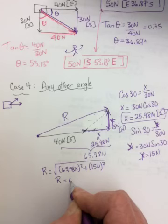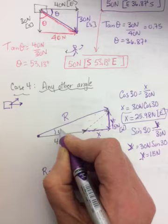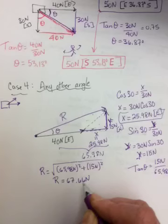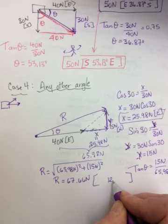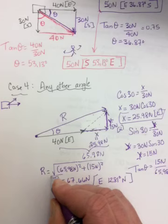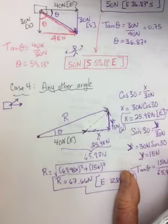But of course we still have to find the angle. So tan theta equals 15 Newtons over 65.98 Newtons, inverse tan, and you'll get an angle of 12.81 degrees. Which way are we measuring? We're going east and then we turned and went north. So the final answer is the vector's length and its direction.